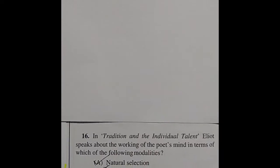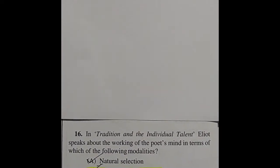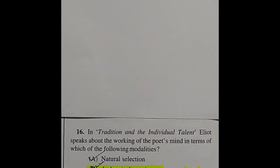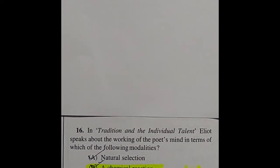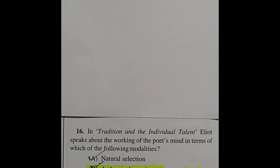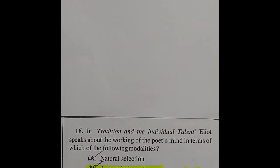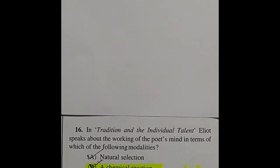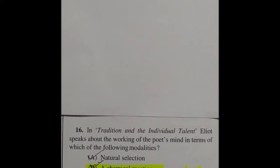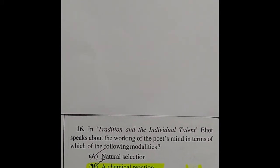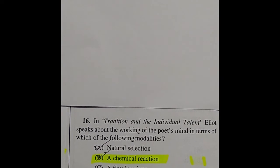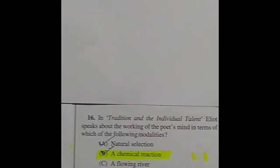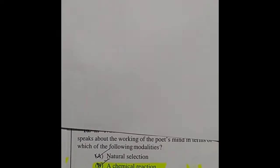Question 16: In 'Tradition and the Individual Talent,' Eliot speaks about the working of the poet's mind in terms of which of the following modalities? The answer is option B: a chemical reaction.